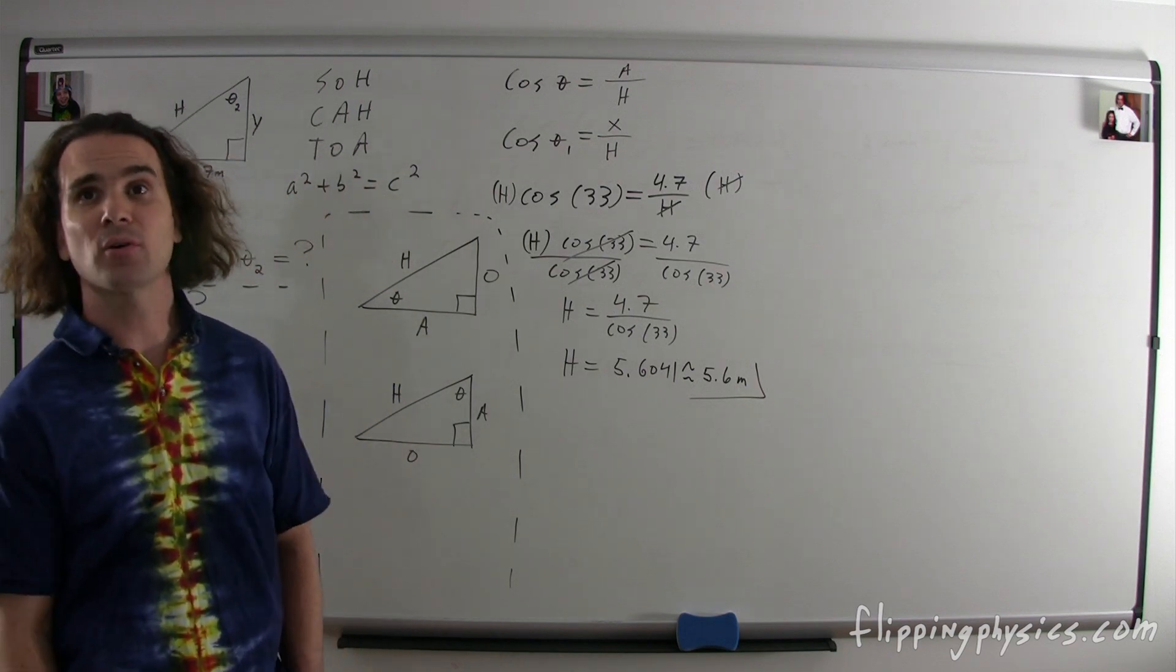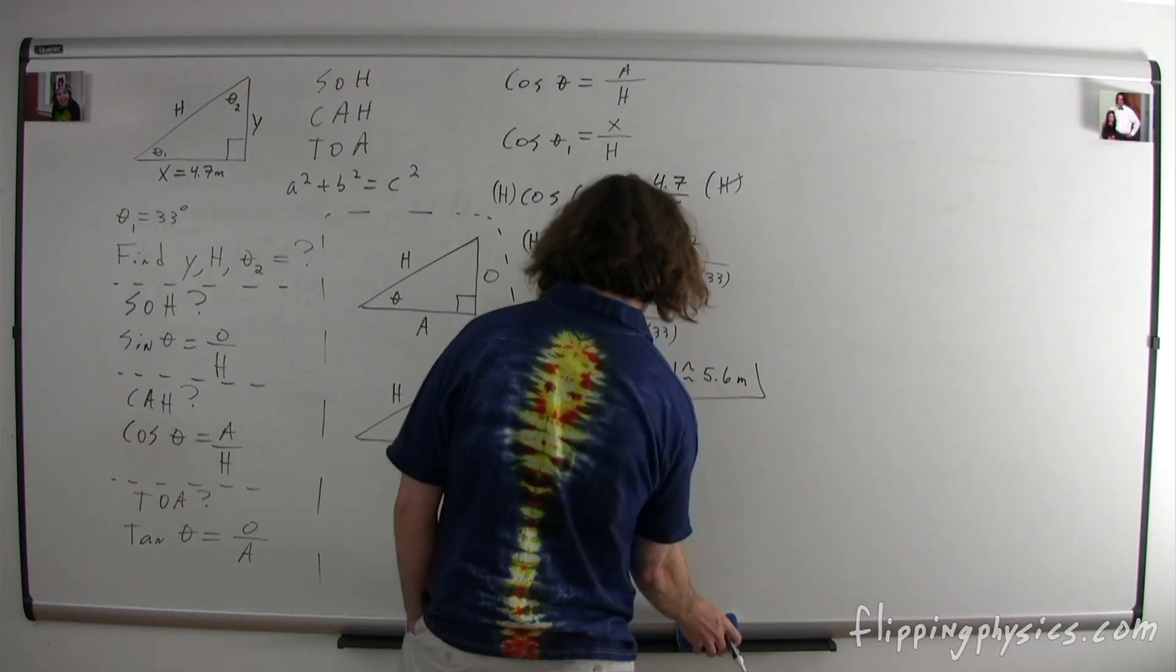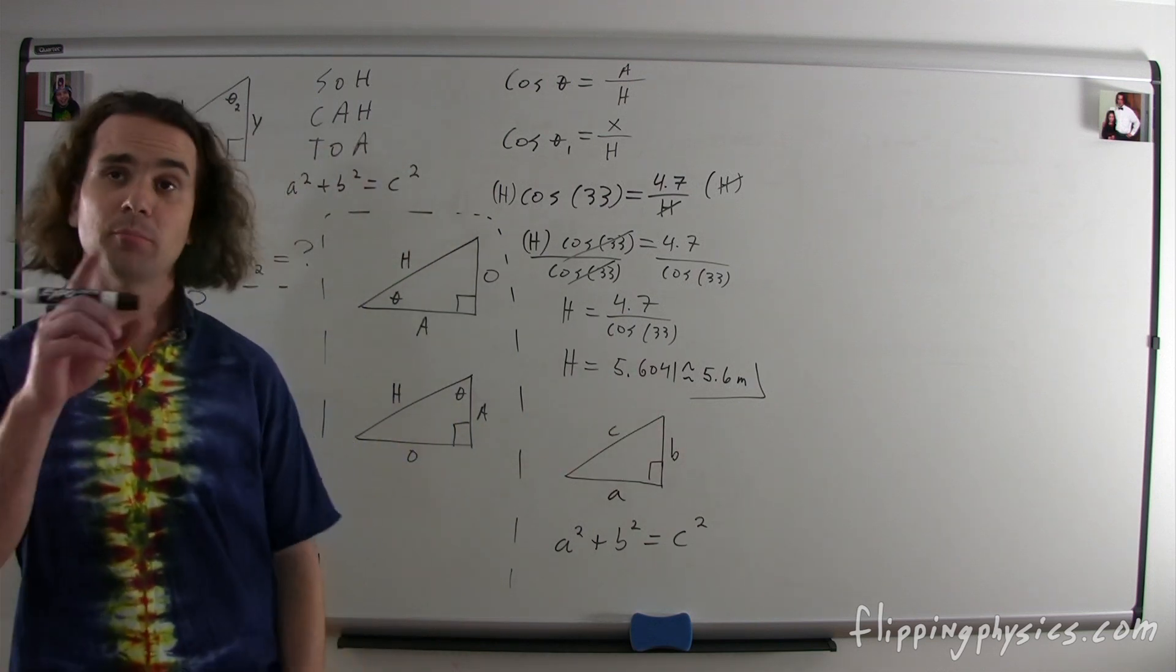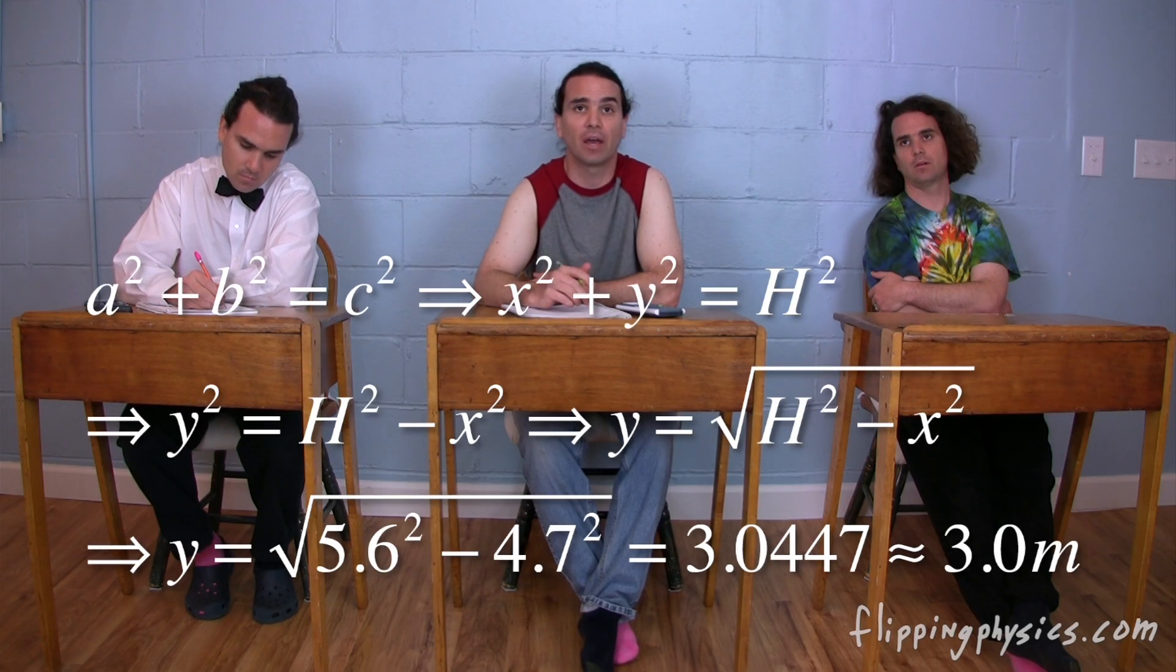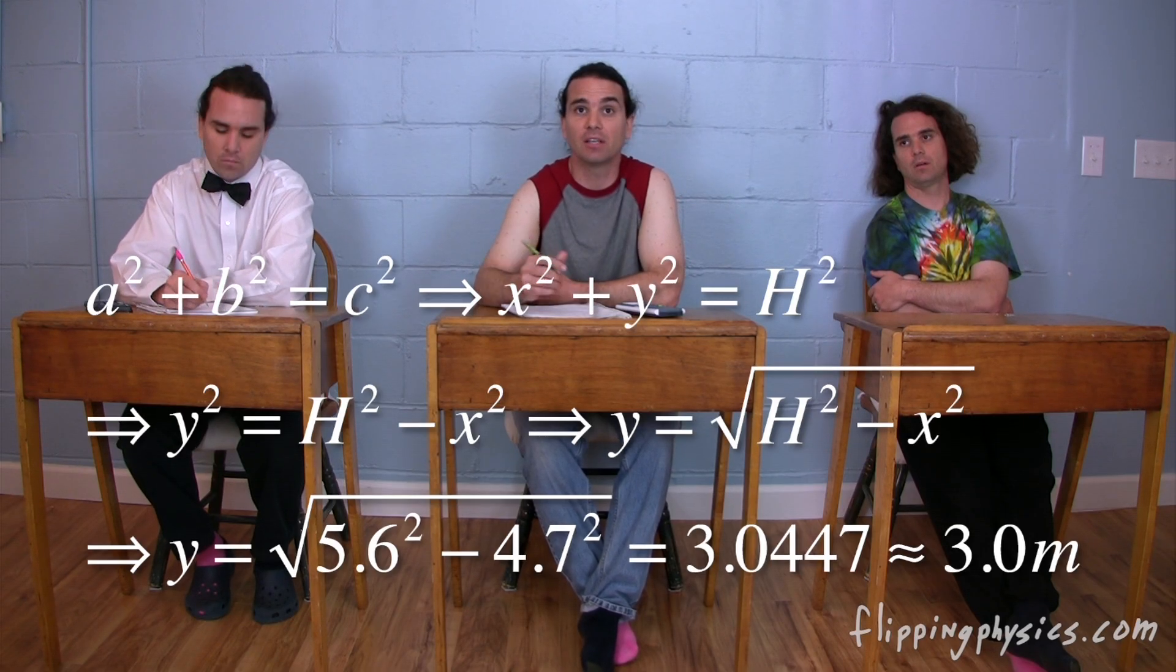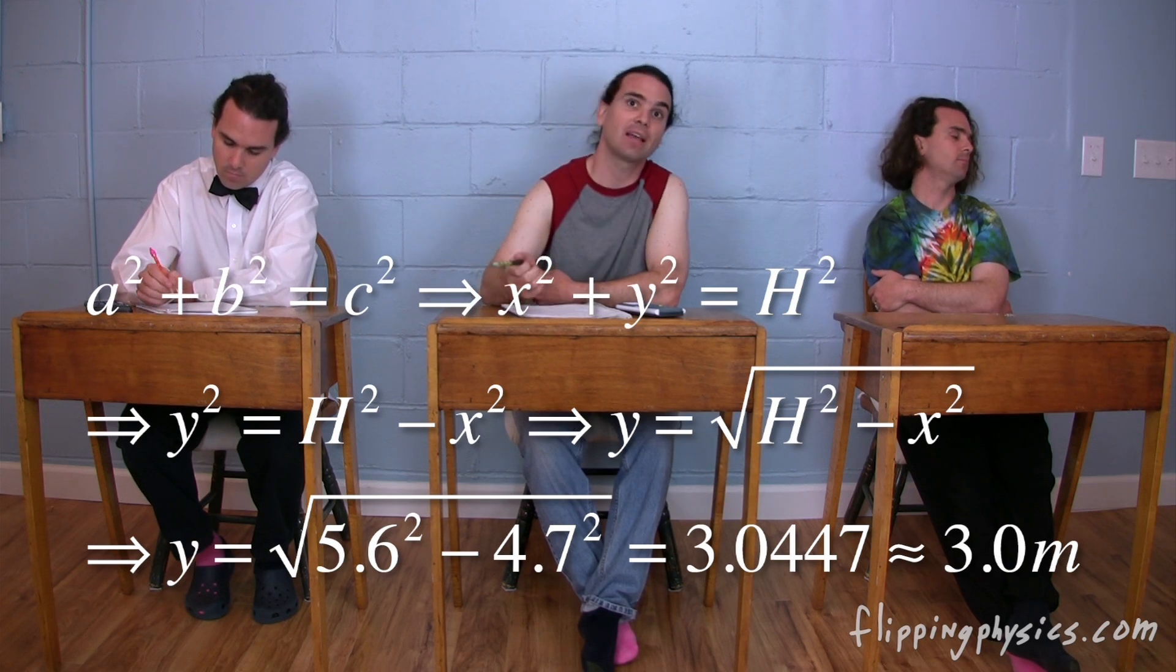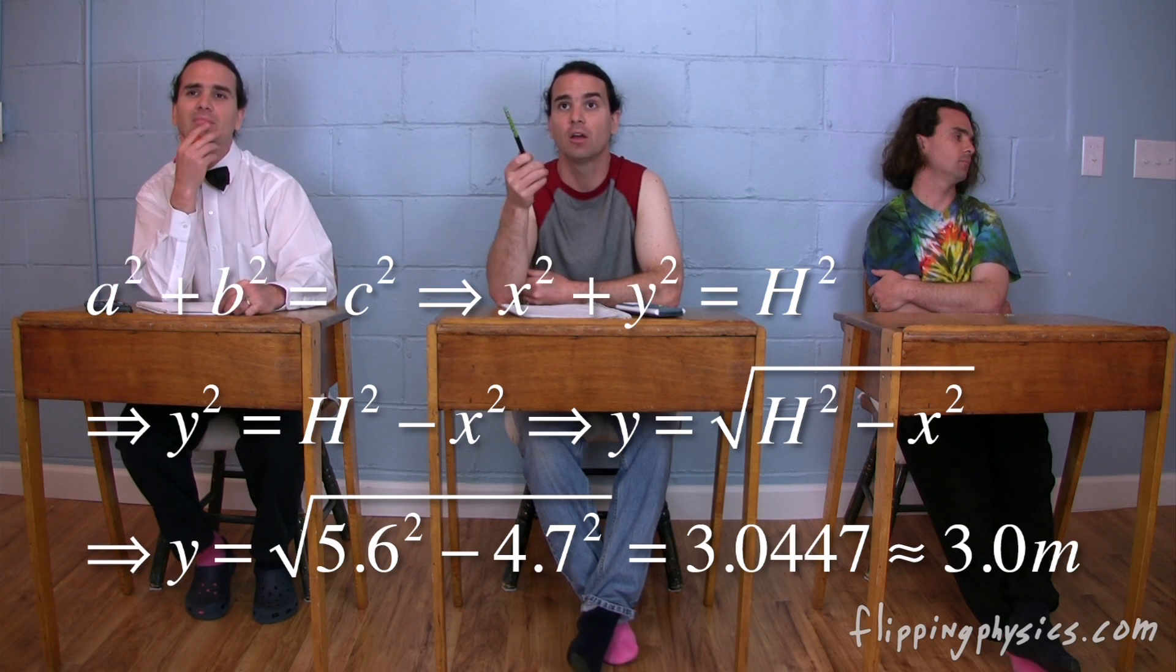Now we need to find either y or theta 2. Bobby? Can't we just use the Pythagorean Theorem now? Yes. How do we know we can use the Pythagorean Theorem? Because it's a right triangle? Yes. a squared plus b squared equals c squared. The Pythagorean Theorem. And please notice that the c is always opposite the right angle because it represents the hypotenuse. Okay. a squared plus b squared equals c squared. So x squared plus y squared equals the hypotenuse squared. And to solve for y, we subtract x squared from both sides and then take the square root of the whole equation. That gives us y equals the square root of the quantity h squared minus x squared.